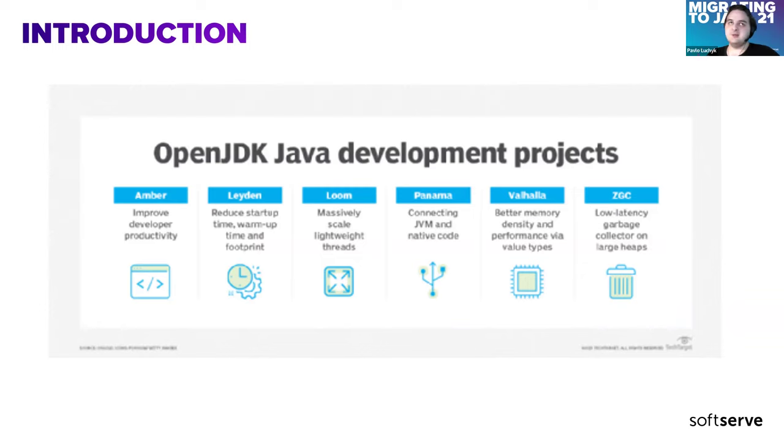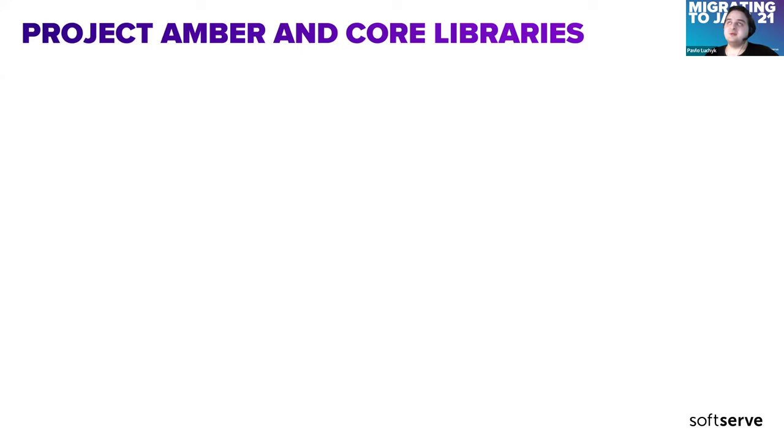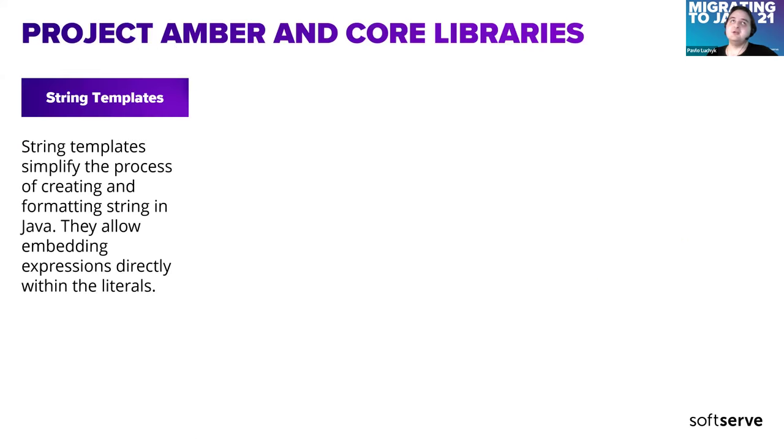We'll cover mostly Amber project that brings a lot of syntax triggers and a lot of clarity in our code. And we will also make some focus on Project Loom, as it brings a lot of different and magnificent features such as virtual threads. There are also some other improvements, for example, for the garbage collectors. Let's start with string templates.